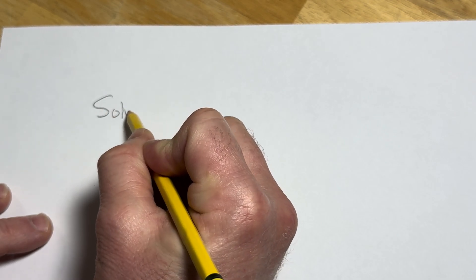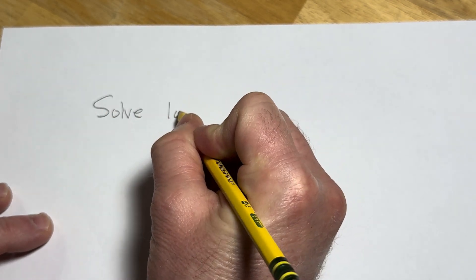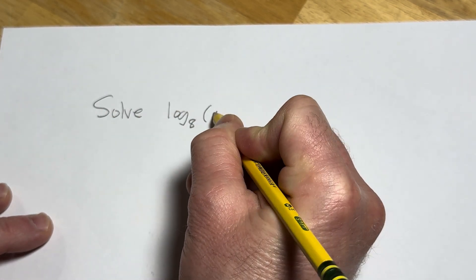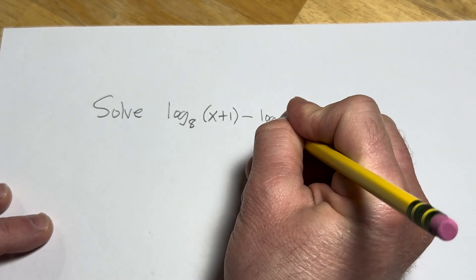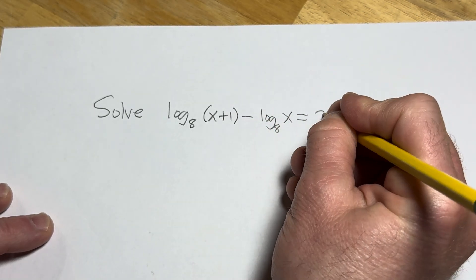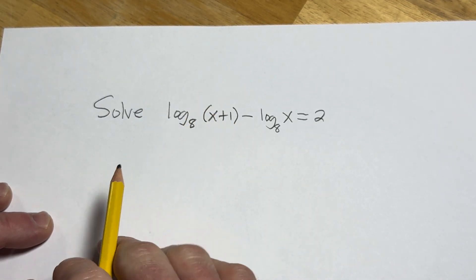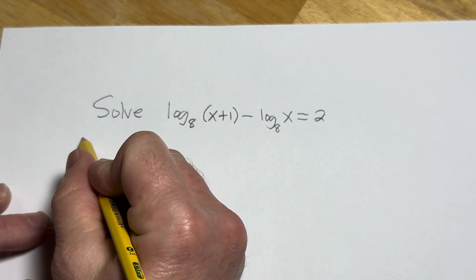So the question is to solve log base 8 of x plus 1 minus log base 8 of x, and this is equal to 2. So we have to solve this logarithmic equation. Let's go through it. Solution.